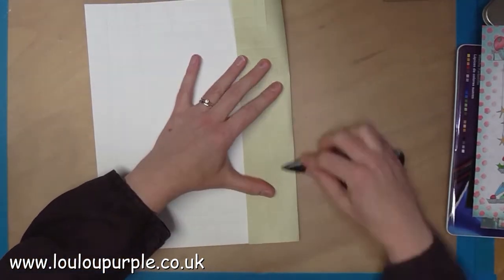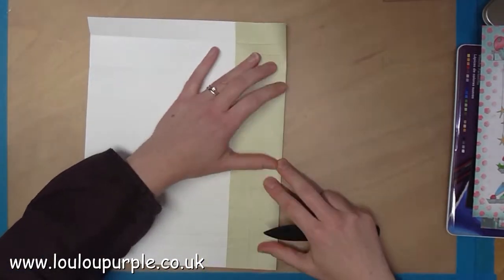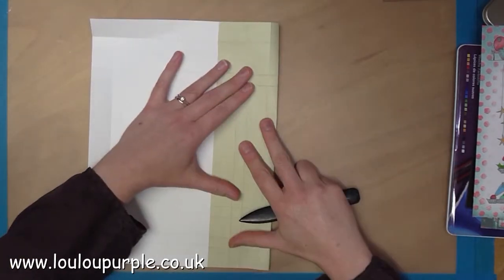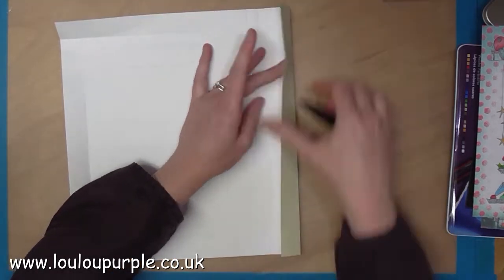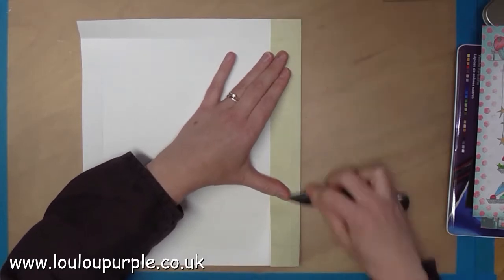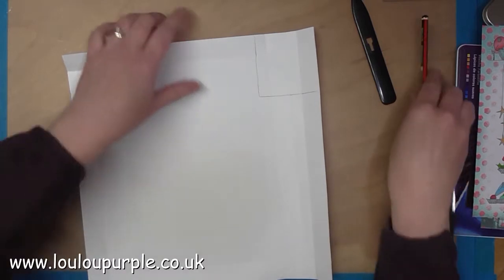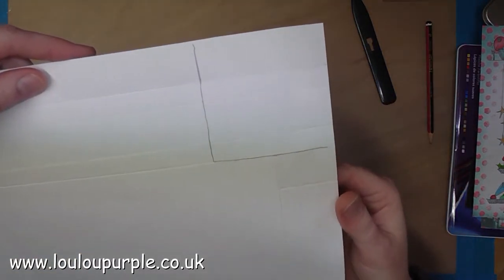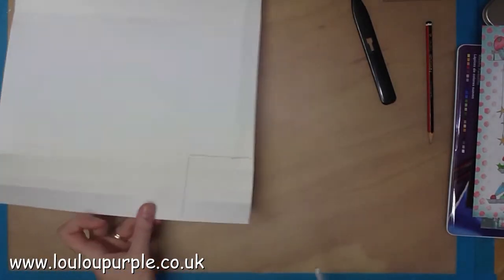Next, use your bone folder to fold down all the creases of the solid lines. You will have then made a square in each corner. I've just drawn it in so you can see it, and you need to cut these squares out in each of the corners.